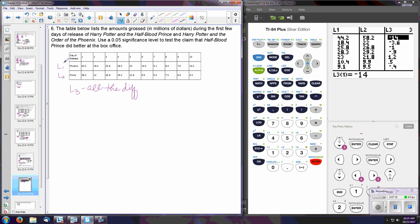So what are they asking us to test here? This is the amount of money that each of these films made for the first 10 days after release. At a 0.05 significance level, test the claim that Half-Blood Prince did better at the box office. So our null hypothesis is still going to be that the mean of the differences is equal to zero, because if they did equally well, then their differences should all be about zero.